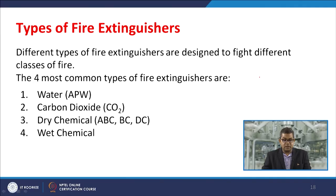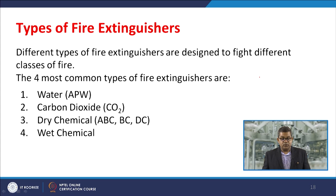Based on this knowledge, different types of fire extinguishers are used to fight different classes of fire. There are four most common types: water (APW — air pressurized water), carbon dioxide (CO2), dry chemicals (ABC, BC, DC), and wet chemicals.